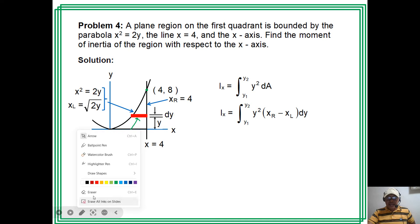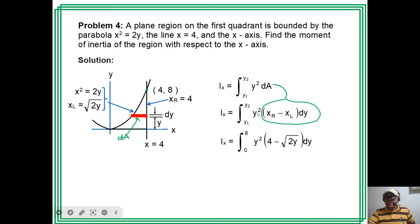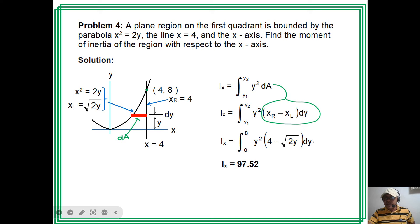The formula is: Iₓ = ∫ y² dA = ∫ y² (x_right − x_left) dy = ∫ y² (4 − √(2y)) dy, with limits from y = 0 to y = 8. Note: change y to x when entering in the calculator. Pressing the calculator gives the answer 97.52.